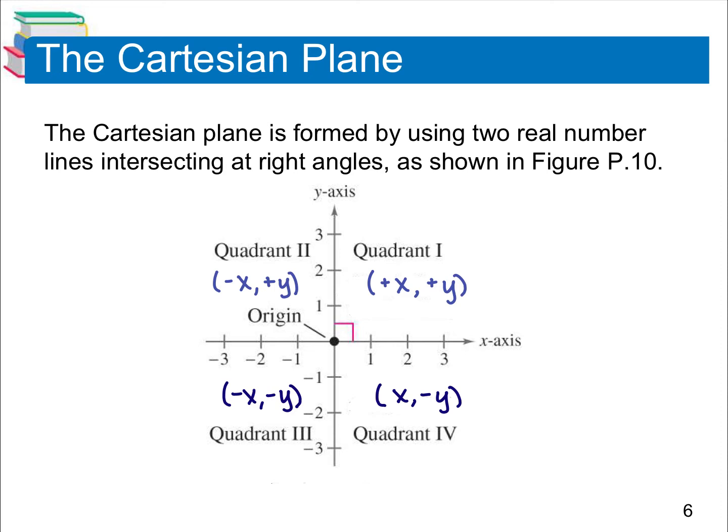Your origin is always the ordered pair (0, 0). With what these two axes cross and form are four different quadrants. Starting at the top right-hand quadrant, you have quadrant 1. Then going to the left on the top is quadrant 2. Down on the left is quadrant 3. And down on the right is quadrant 4.